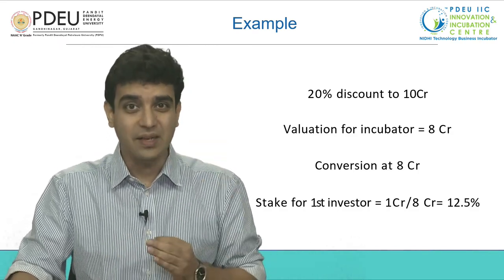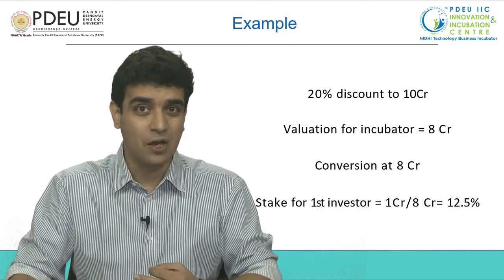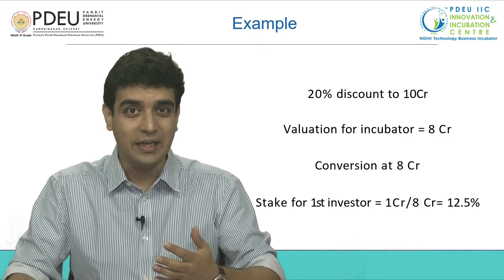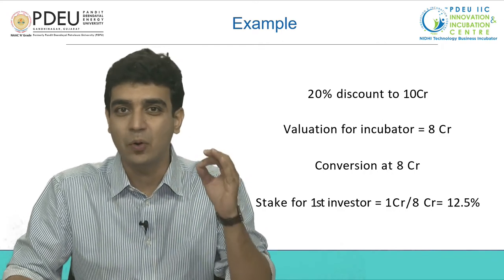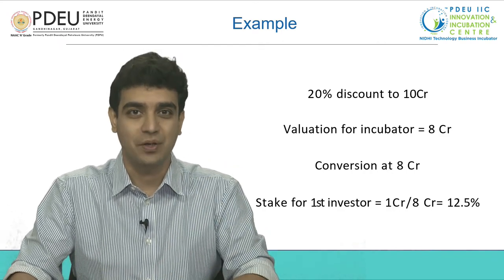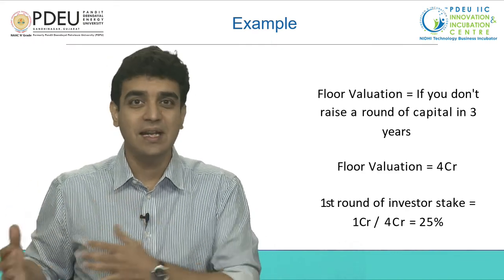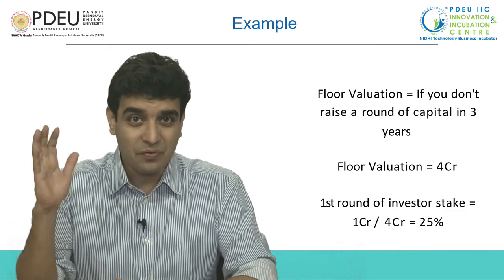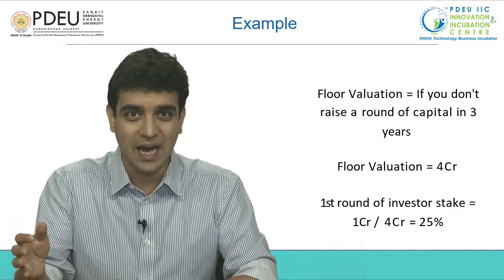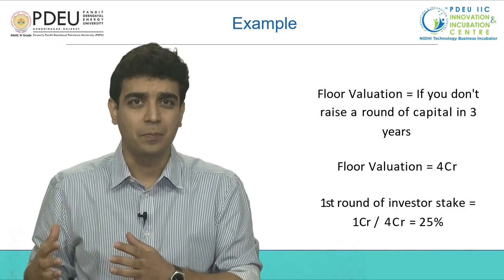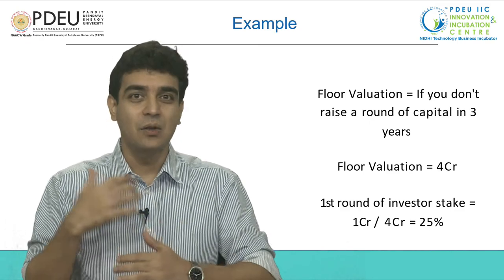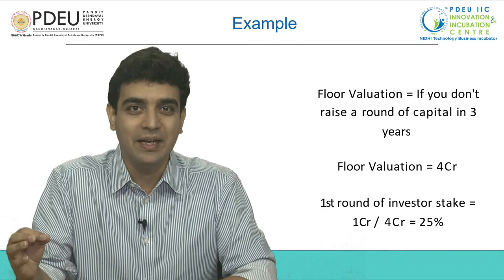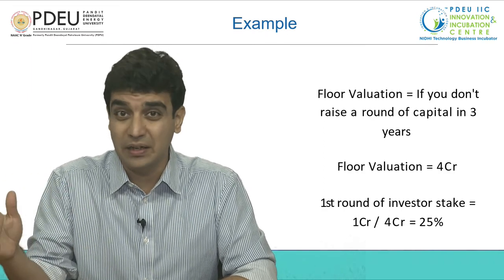Now, the first investor will convert 1 CR of investment, which is currently in CCD form, into equity, thereby taking 12.5% stake in your venture. What if you do not raise a round of capital in the next 3 years? Then there is a floor valuation of 4 CR, which is a predefined number. When 1 CR gets converted at a floor valuation of 4 CR, you will end up giving 25% stake to the investor.